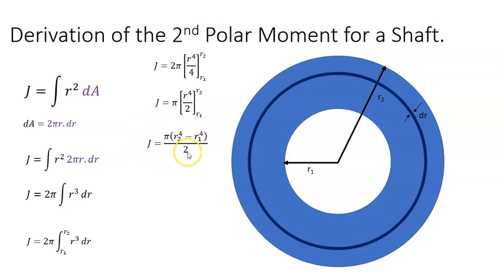I would prefer to see this expressed in terms of the diameter. So r2 is D over 2, and r1 is the small diameter d over 2. Instead of r2, I have the large diameter D over 2. Instead of r1, I have the small diameter d over 2, both to the power of 4.